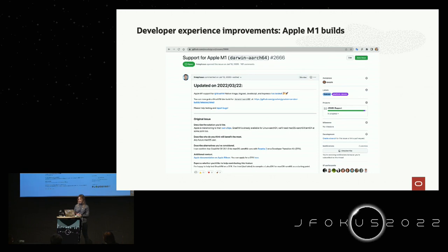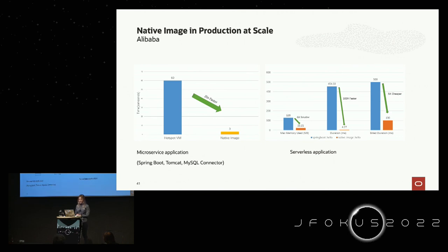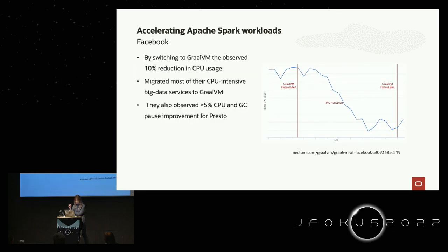To give you an example of how others are using native image in production — one I particularly like is from Alibaba. They're deploying applications to the cloud and wanted to reduce startup times and memory usage. Looking at a typical microservice application with Spring Boot, Tomcat, MySQL and other components, it was quite large — by default starting in something like 60 seconds. With native image they got it down to 3 seconds, around a 20x speedup.